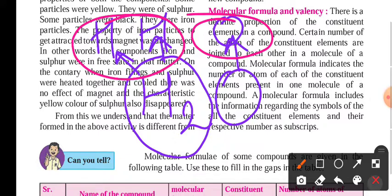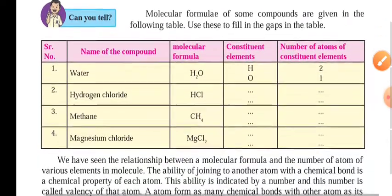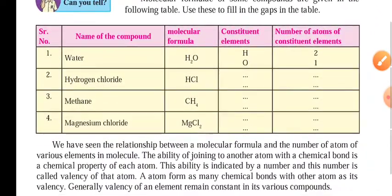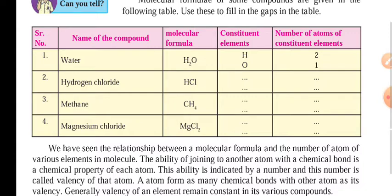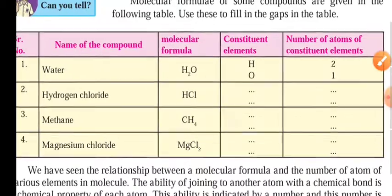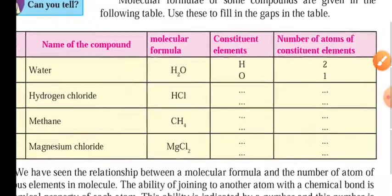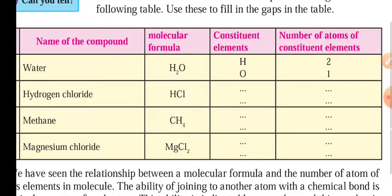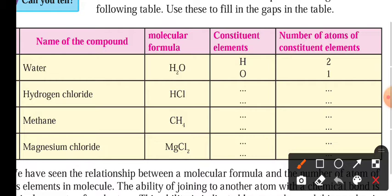Today we are going to talk about the molecular formula — how we write that molecular formula. Here are some compounds with their names given. The first one is water, formula H2O. The constituent elements are hydrogen and oxygen. The number of atoms of constituent elements: two hydrogen and one oxygen.